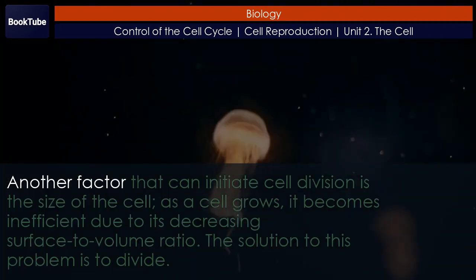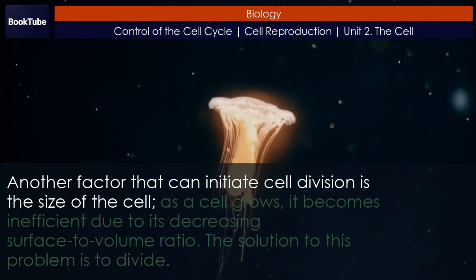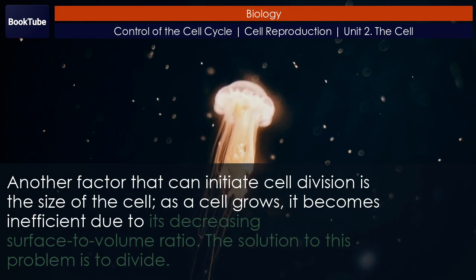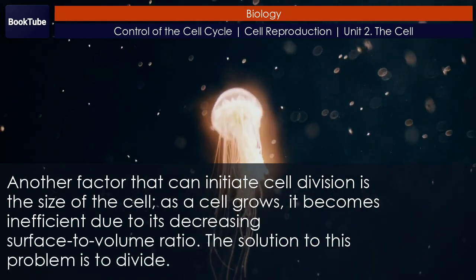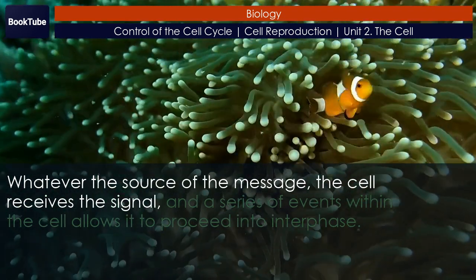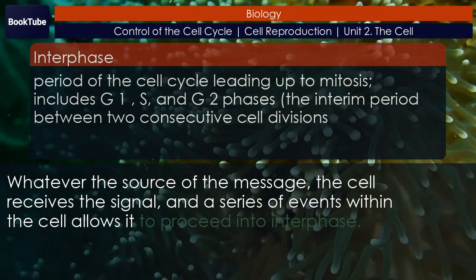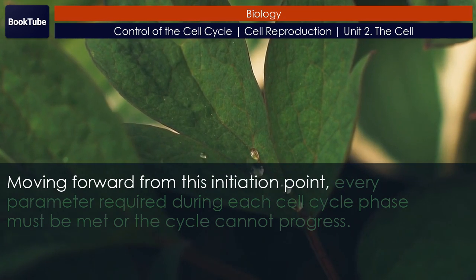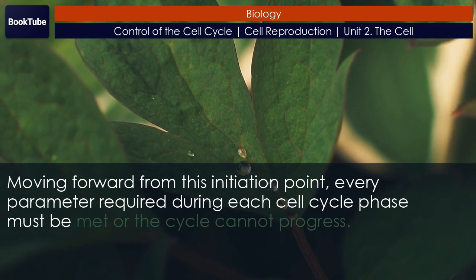Crowding of cells can also inhibit cell division. Another factor that can initiate cell division is the size of the cell — as a cell grows it becomes inefficient due to its decreasing surface-to-volume ratio, and the solution is to divide. Whatever the source of the message, the cell receives the signal and a series of events within the cell allows it to proceed into interphase.